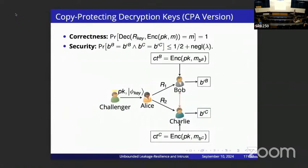Let me more formally define the previous no-cloning-based notions. In copy protection, some functionality is encoded into a quantum state that the adversary tries to clone. More formally, in the PKE CPA setting, the adversary gets this secret quantum key and tries to split it into two entangled quantum registers. After splitting, the two adversaries don't communicate, and they each receive random challenge encryptions of random bit b and try to simultaneously guess the hidden challenge bits.